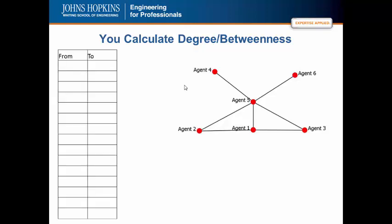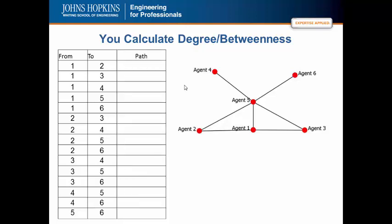We have 6 nodes now, so if we enumerate them as I suggested before, we should have 15 pairs. The shortest path from 1 to 2 is itself. The same for 1 to 3. 1 to 4, you'll notice we have to go through agent 5. The same thing from 1 to 6.